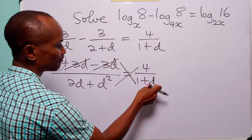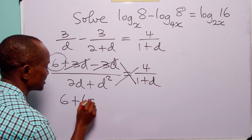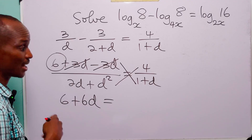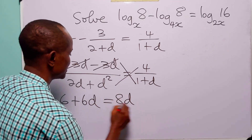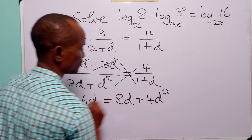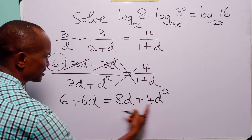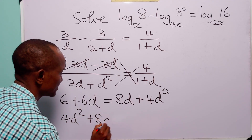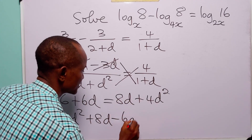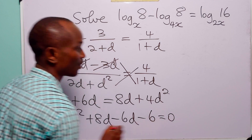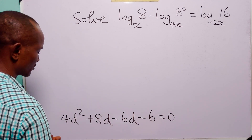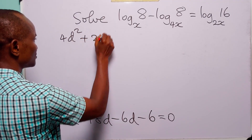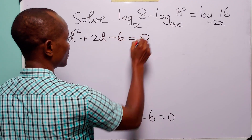Rearranging into standard quadratic form, we bring all terms to one side: 4d² + 8d − 6d − 6 = 0, which simplifies to 4d² + 2d − 6 = 0.